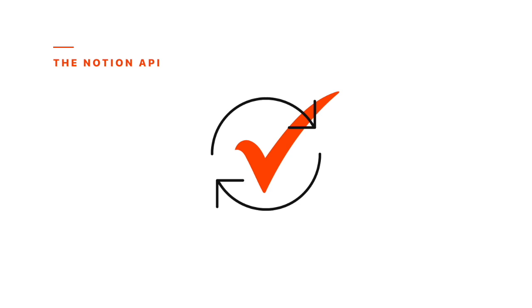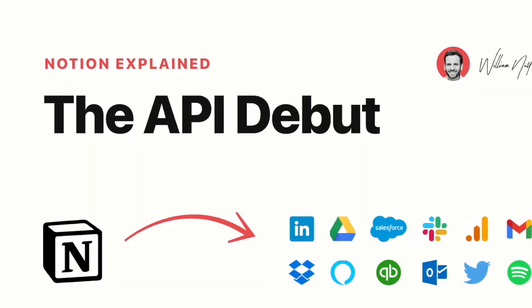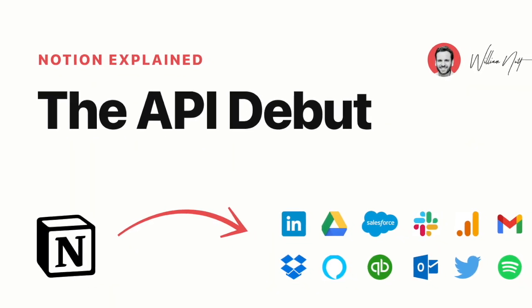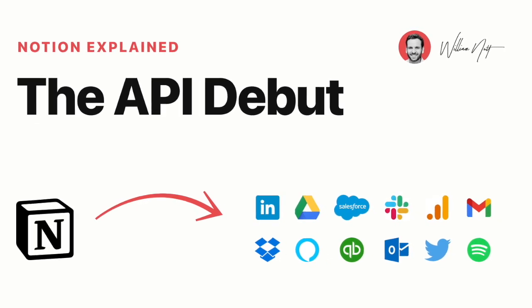Within Zapier, the customizations you create are called Zaps. Each Zap consists of a trigger followed by one or more actions. In a sense, you're defining the statement: if trigger, do actions. For example: if a contact is added to Google Contacts, then create an entry in the Contacts database in Notion. If a prospect enters a new sales stage, send an email to that prospect. If an item is added to the Tweets database, publish it to Twitter. And if it's the first day of the month, email a report to stakeholders. In my deep dive into the API debut, you'll find detailed instructions for configuring Zapier with Notion, and I'll link to that within the description of this video.